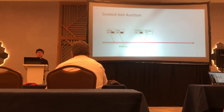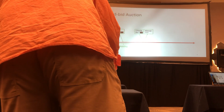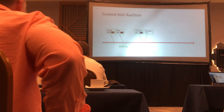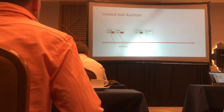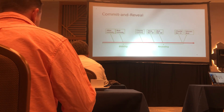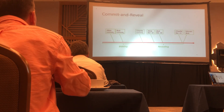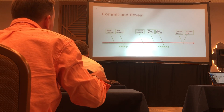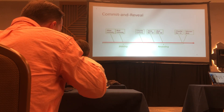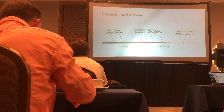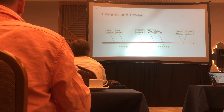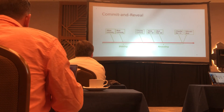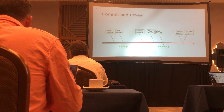Now we come to the sealed bid auction. In a sealed bid auction, everyone cannot know everyone else's bid during the bidding period. This creates a problem because at the end of the bidding period we don't know who is the winner. We can use a simple approach called commit-and-reveal to overcome this issue — ask everyone to commit, and later let everyone reveal it. The reveal must ensure that the bid matches the commitment; for example, the hash of the bid equals the commitment.